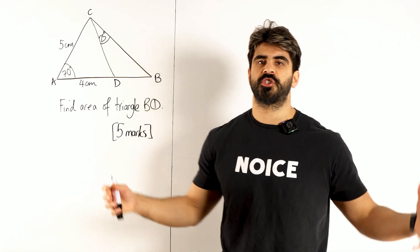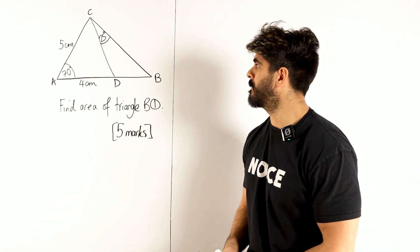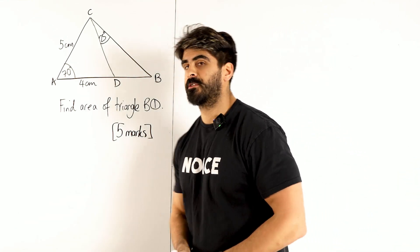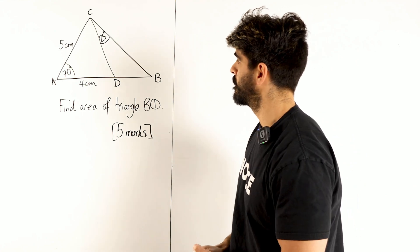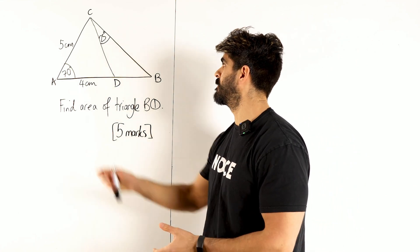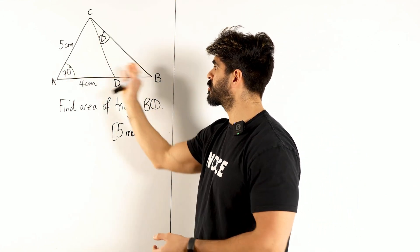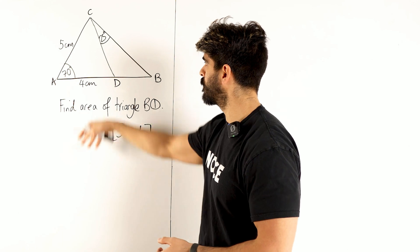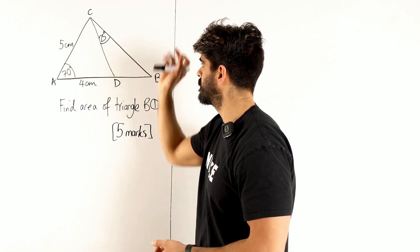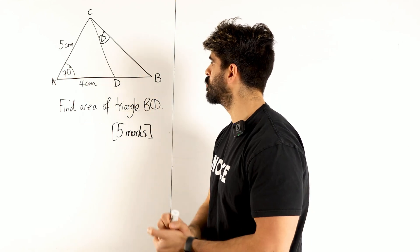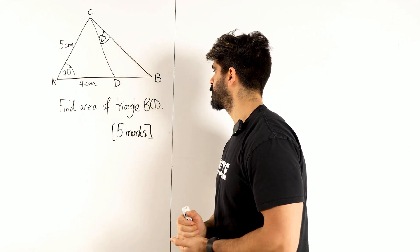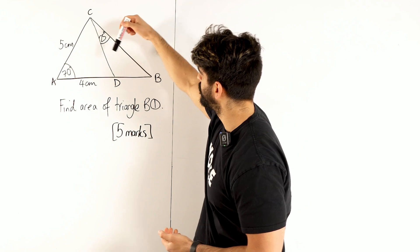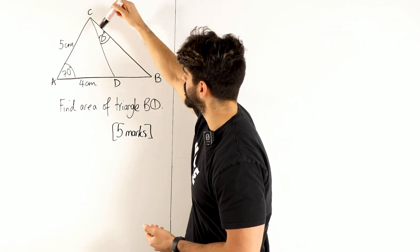Five marks, GCSE, non-right-angled trigonometry. So we have this big triangle here with all these lengths and angles marked. Find the area of triangle BCD.